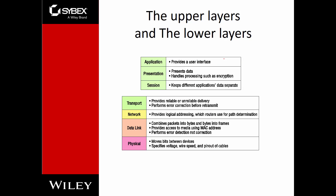Let's talk about our OSI model. It consists of seven layers: Application, Presentation, Session, Transport, Network, Data Link, and Physical. At each layer, they perform specific tasks.